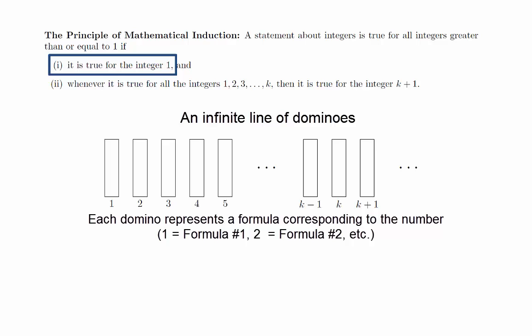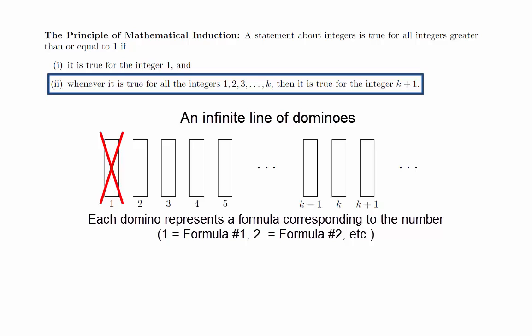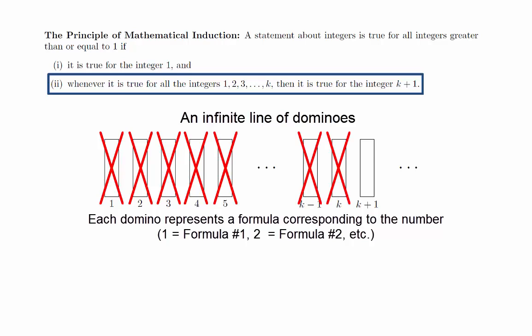Our goal is to be able to knock over all the dominoes. The first condition of mathematical induction is the claim that we're able to knock the first domino over. The second condition is the claim that for any k, we can knock over the k plus first domino if we can knock over the first k dominoes. For example, if we can knock over the first three dominoes, then we can also knock over the fourth; if we can knock over the first four, then we can knock over the fifth — and this works for any integer k. Intuitively, if both these conditions are met, we should be able to knock over the entire line.